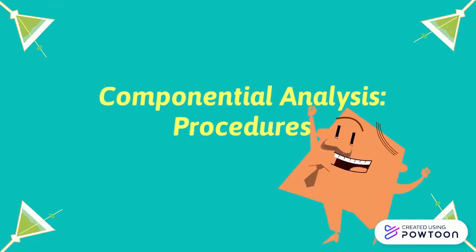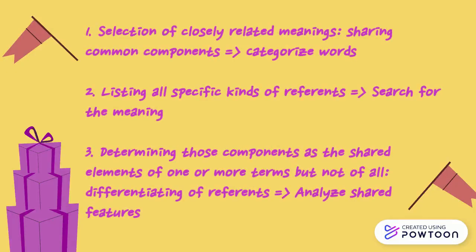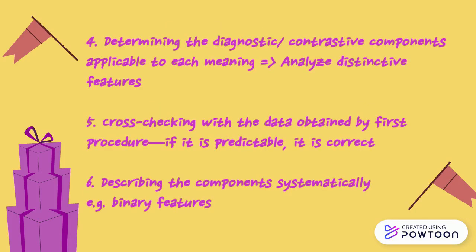Semantic components involve six steps: 1. Sharing common components to categorize words. 2. Search for the meaning. 3. Analyze shared features. 4. Analyze distinctive features. 5. If it is predictable, it is correct. 6. Describing the components systematically.